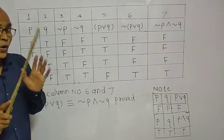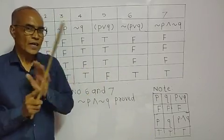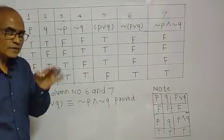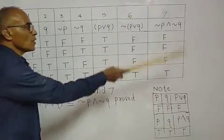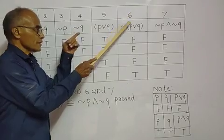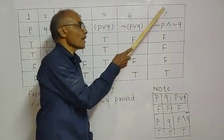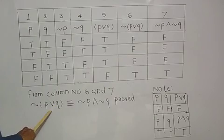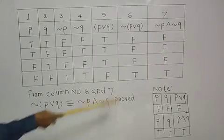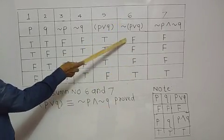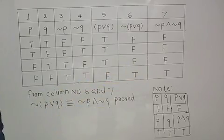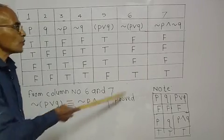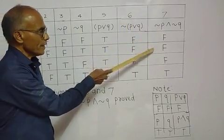Column number six is left hand side - negation of P or Q. The values you see are F F F T. The same values you see in column number seven, the right hand side negation of P and negation of Q column: F F F T.